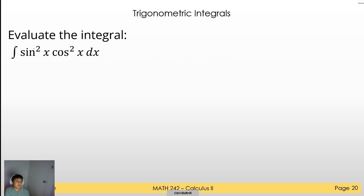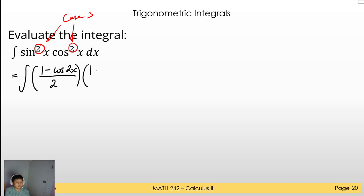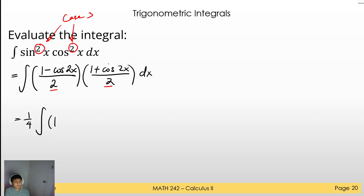Example 3: ∫sin²x cos²x dx. Both powers are even, so we use Case 3 with the half angle formulas. Replace sin²x = (1 − cos2x)/2 and cos²x = (1 + cos2x)/2, giving ∫[(1 − cos2x)/2][(1 + cos2x)/2] dx. Factor out 1/4 and apply FOIL: 1/4 ∫(1 − cos²2x) dx.